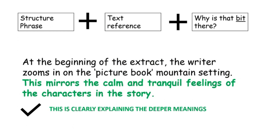You need a structure phrase — so 'at the beginning of the extract, the writer does this' — then a textual reference, so a quote, and then why is that bit there? For example: 'at the beginning of the extract, the writer zooms in on the picture book mountain setting.' We've got the structure phrase 'zooms in,' textual reference 'picture book,' and then the important bit: why is that bit there? 'This mirrors the calm, tranquil feelings of the characters in the story.'